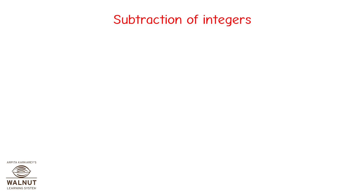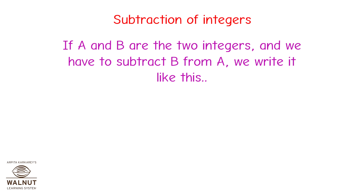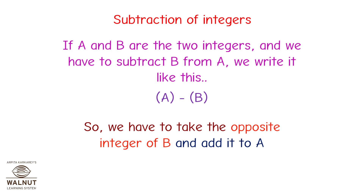Subtraction of integers. If A and B are two integers and we have to subtract B from A, we write it as A minus B. We take the opposite integer of B and add it to A. Let's see how that works.